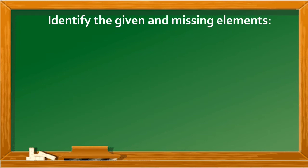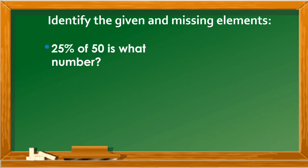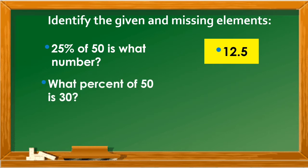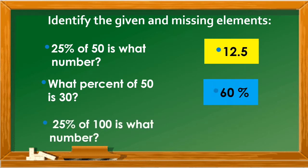Identify the given and missing elements. 25% of 50 is what number? Very good! 12.5. 1% of 50 is 30 — great, 60%. 25% of 100 is what number? Excellent! 400.